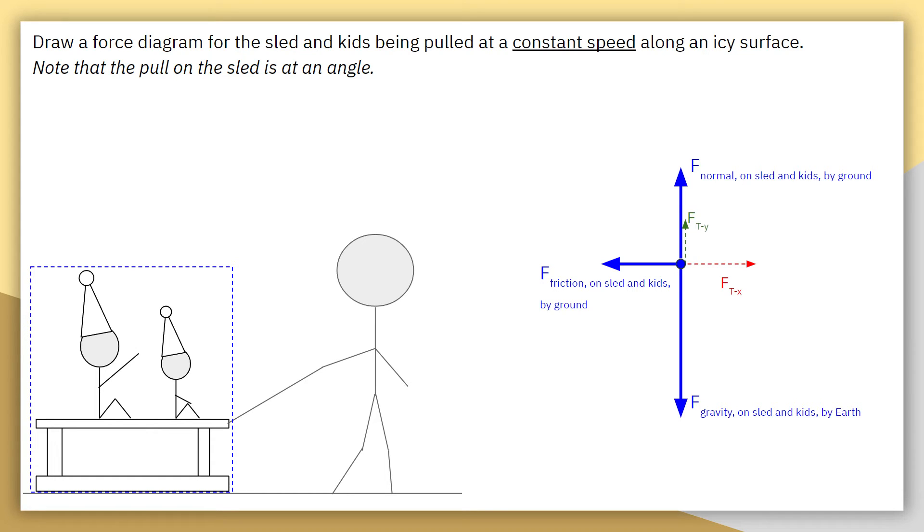With a summation equation, overall, the sled and the kids are being pulled at a constant speed. So when we're talking about the sum of the forces on the x-axis, we have two. To the right, we have the horizontal component of the force tension,